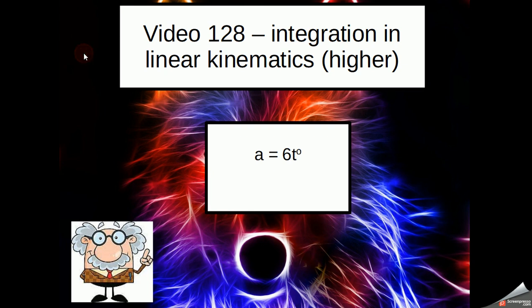The first thing I need to do is consider that any number on its own has got a variable by it, but it's always that variable to the power of 0. So the 6 is actually 6t to the 0. With that then, I'm going to add 1 to the power instead of taking 1 away to give me 6t to the 1.